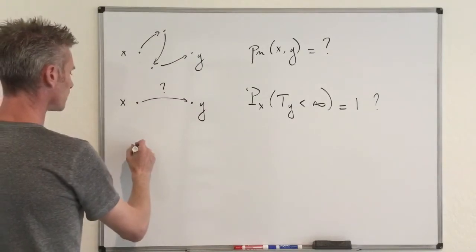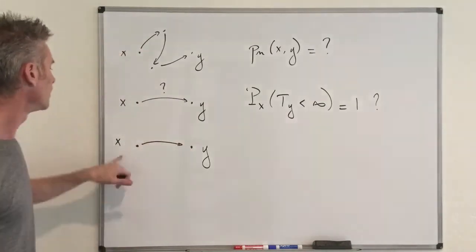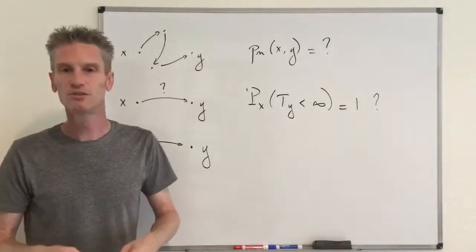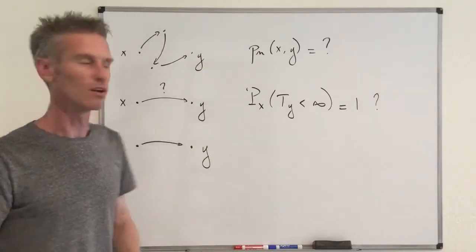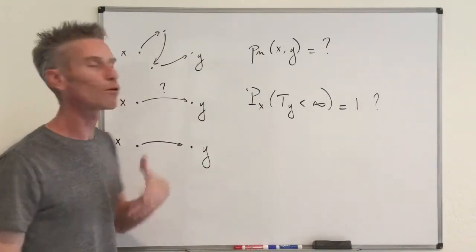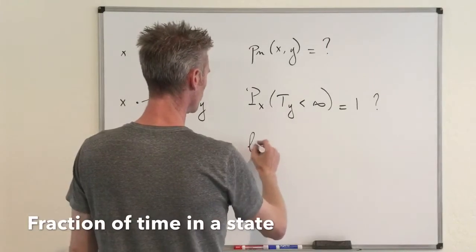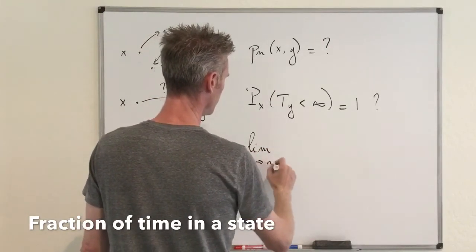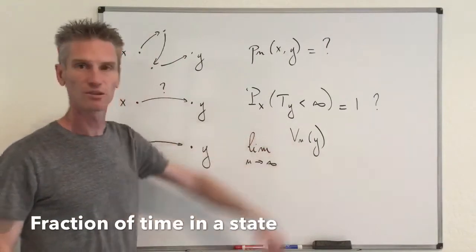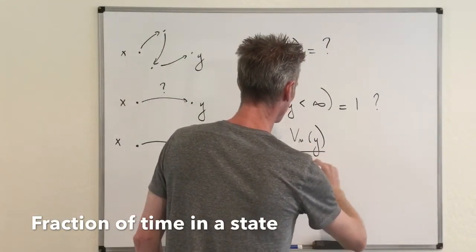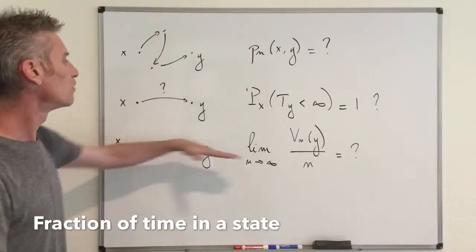The third question: assuming we start from state X and we know we will eventually visit state Y and in fact return to Y infinitely often, what is the fraction of time spent in state Y in the long run? This quantity is the limit as N goes to infinity of the number of visits to state Y before time N, divided by N. This is related to what we call the mean recurrence time — the expected number of time steps needed, starting from Y, to return to state Y.